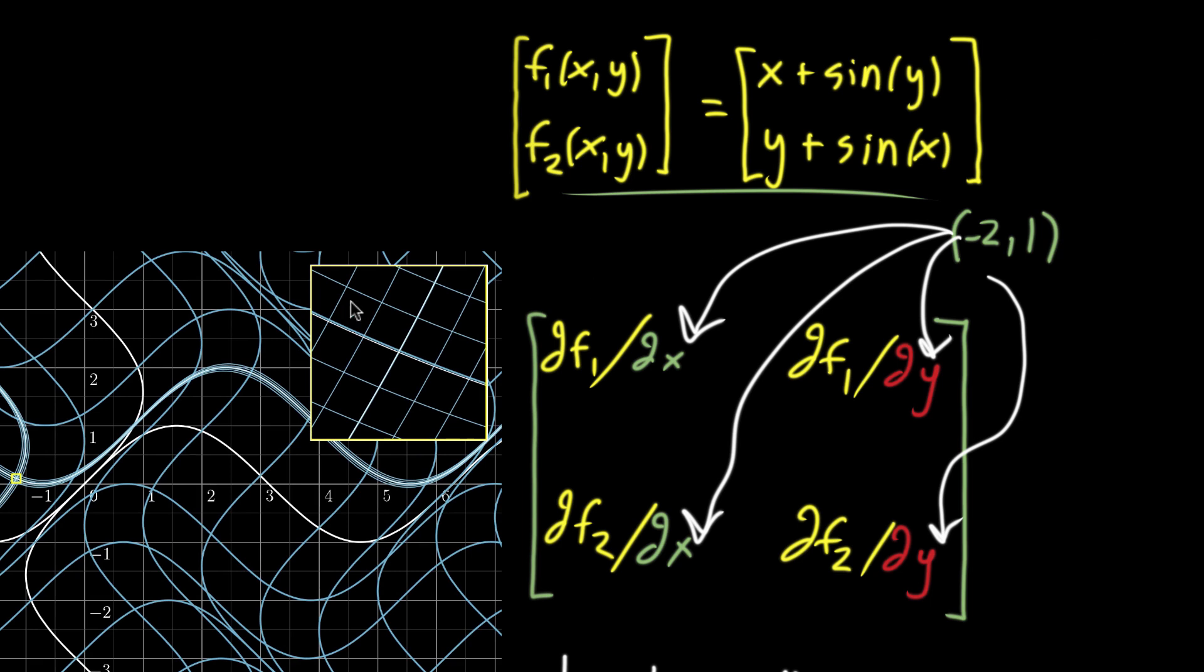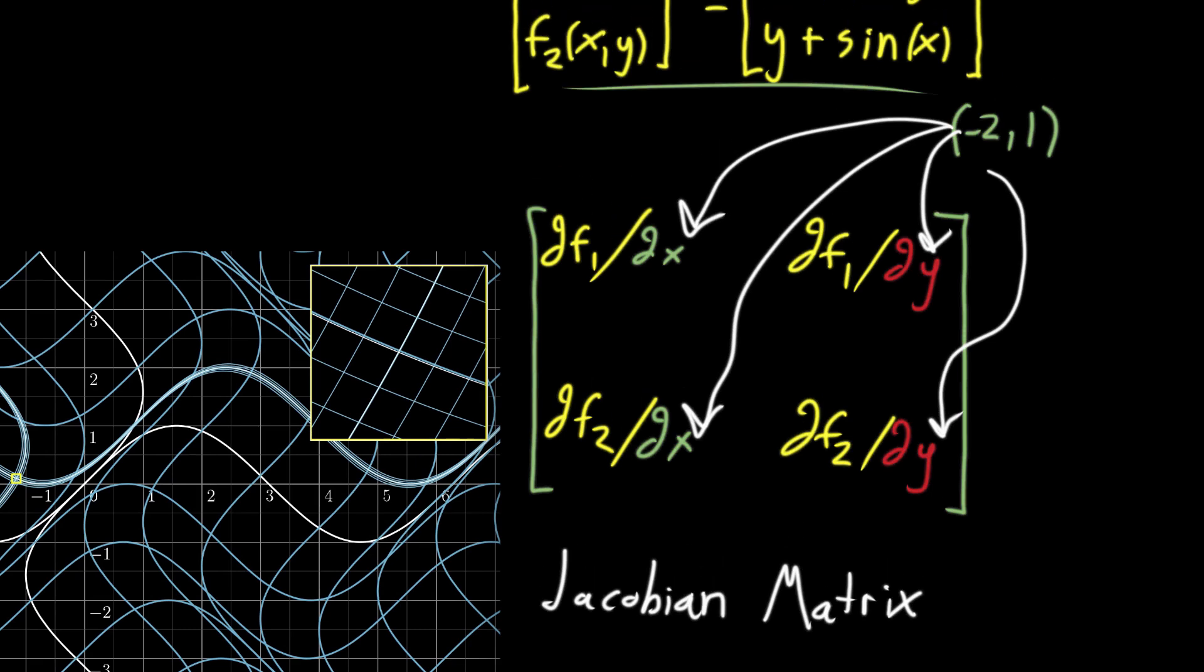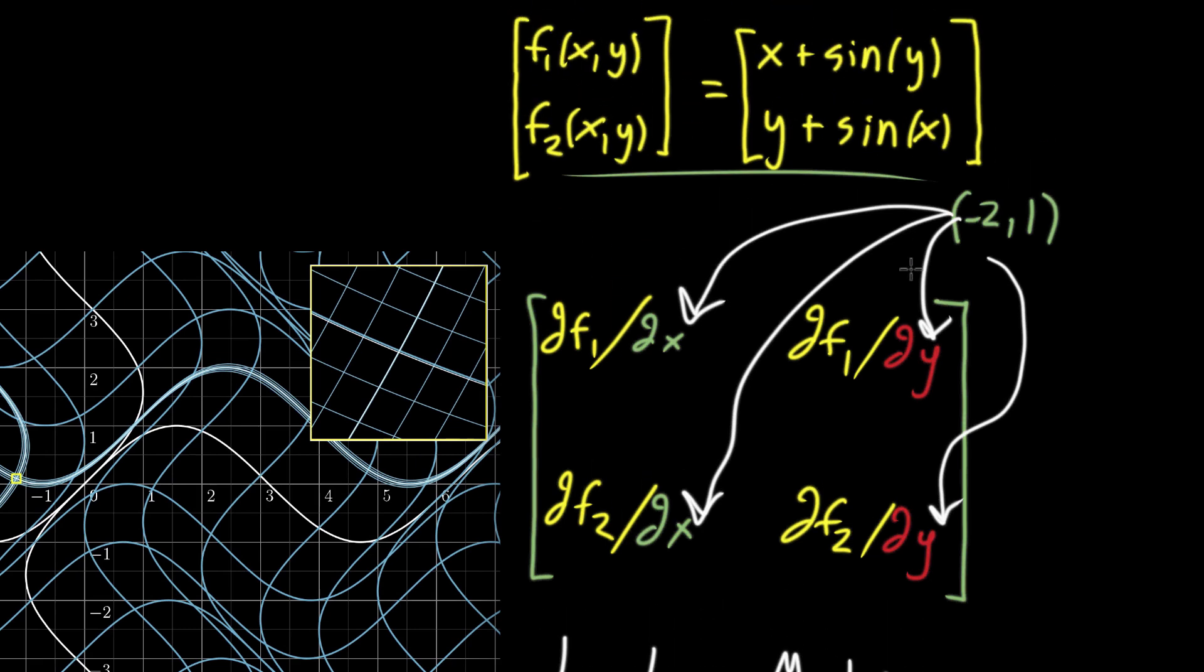So just as a reminder of where we are, we've got this very non-linear transformation, and we showed that if you zoom in on a specific point while that transformation is happening, it looks a lot like something linear. And we reasoned that you can figure out what linear transformation that looks like by taking the partial derivatives of your given function, the one that I defined up here, and then turning that into a matrix.